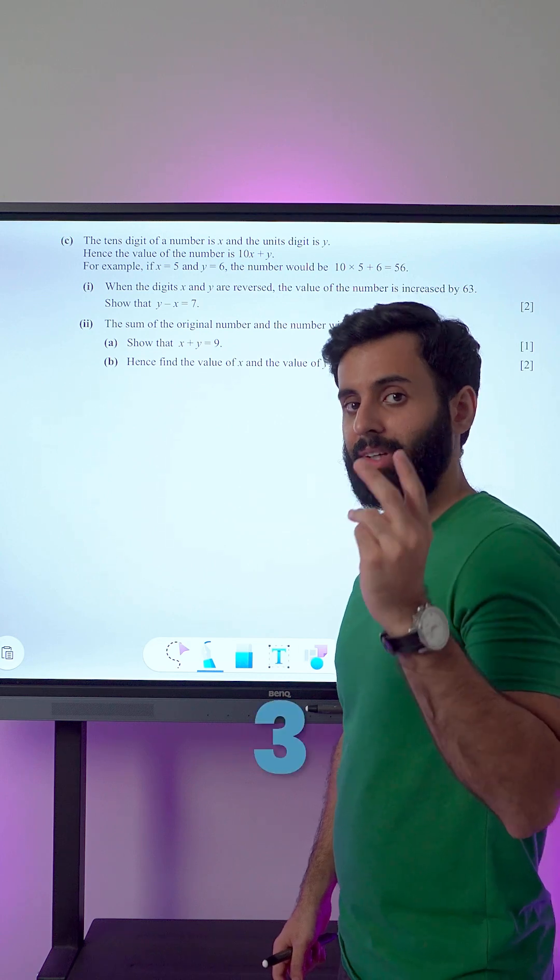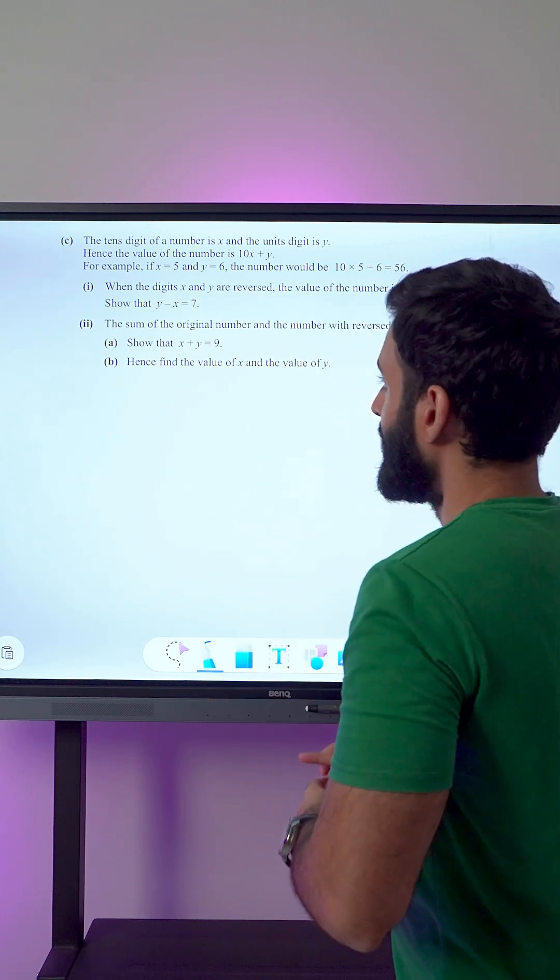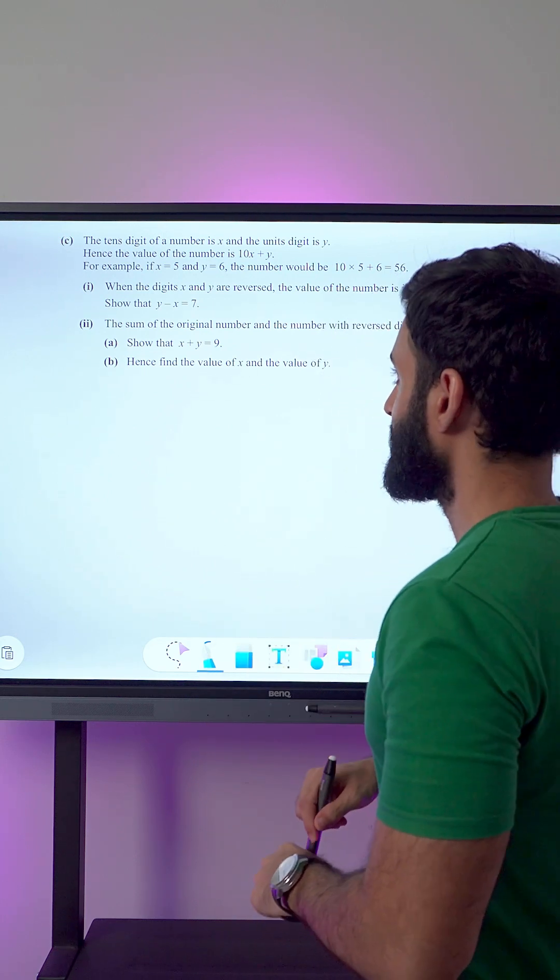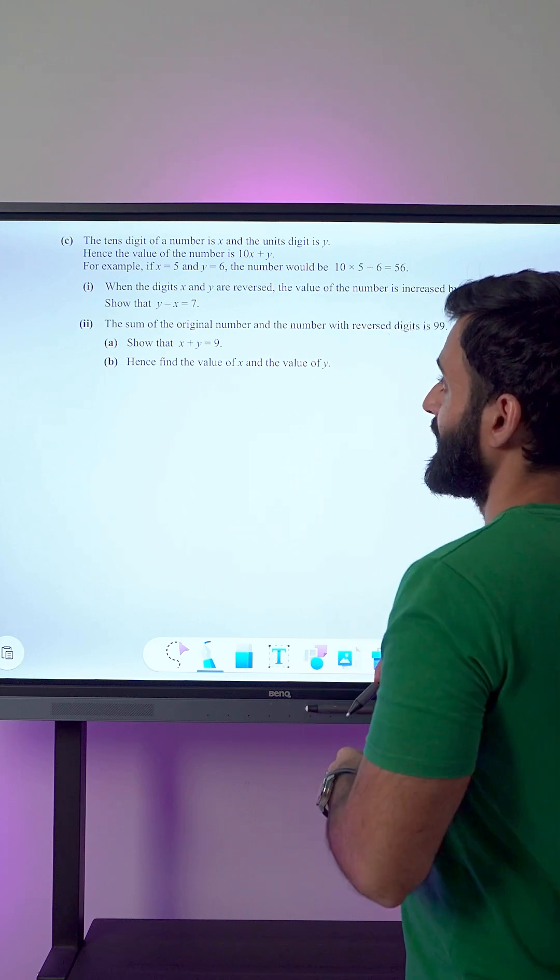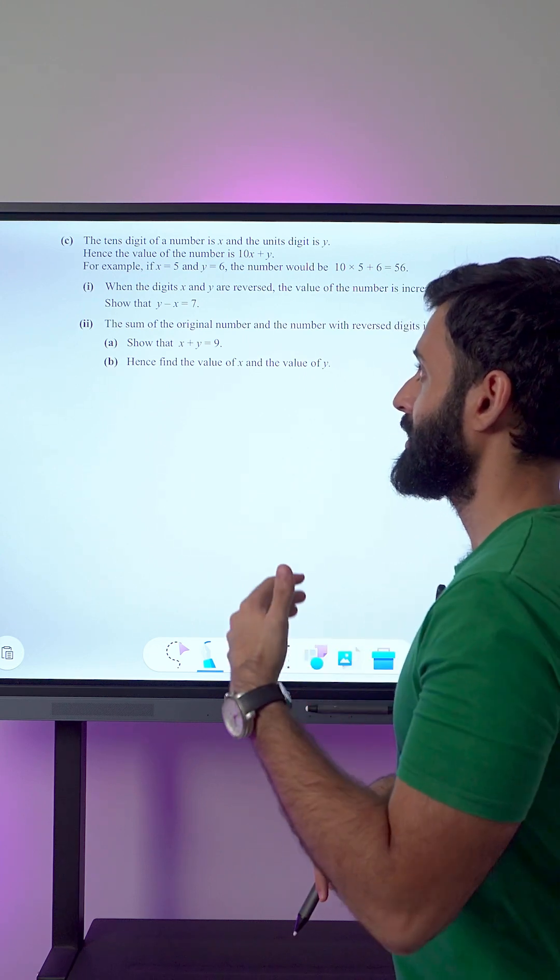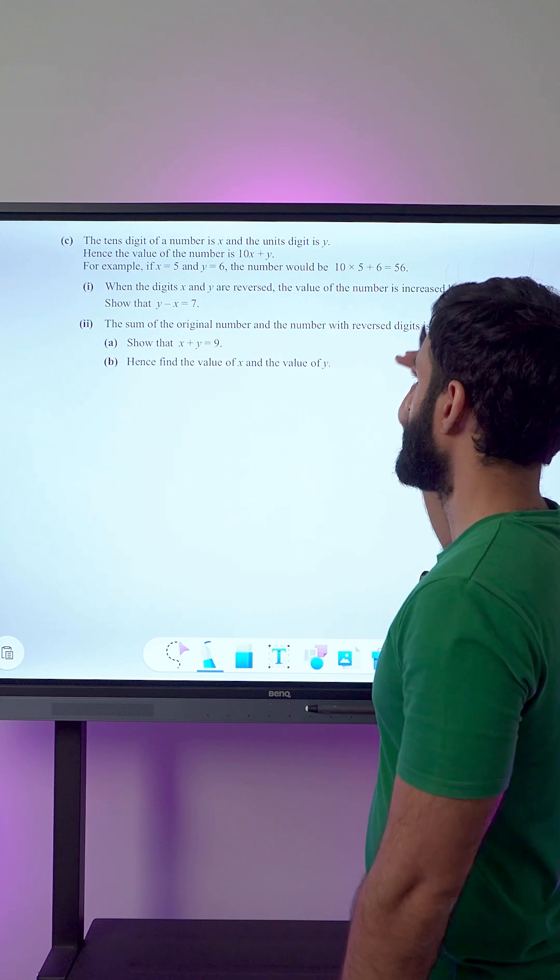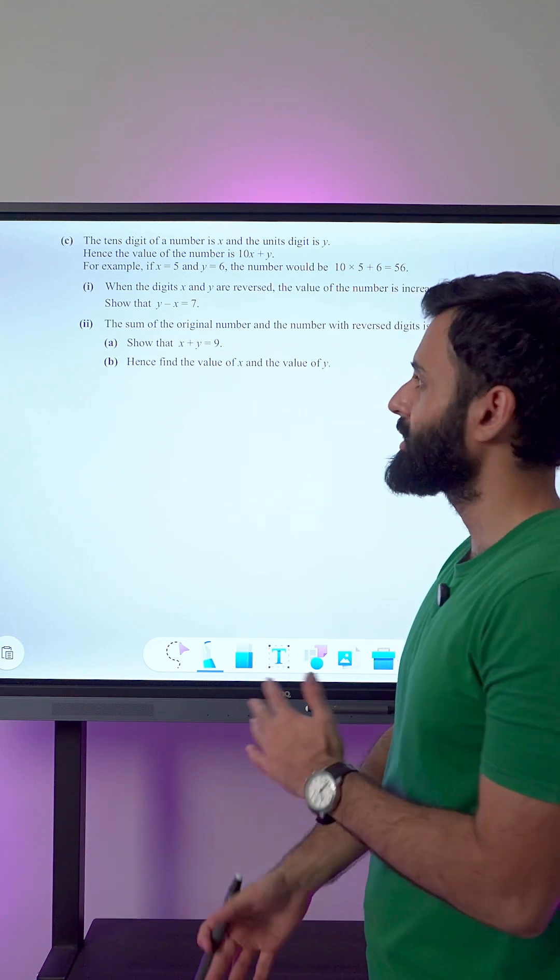I'm going to solve it in 3, 2, 1, let's go. The 10th digit of a number is x and the unit digit is y. Hence, the value of the number is 10x plus y. For example, if x equals 5 and y equals 6, the number would be 10 into 5 plus 6.